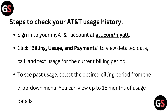To check your AT&T usage history, sign in to your My AT&T account at att.com/myATT. Click 'Billing, Usage and Payments' to view detailed data, call, and text usage for the current billing period. To see past usage, select the desired billing period from the drop-down menu. You can view up to 16 months of usage details.